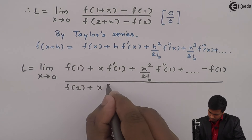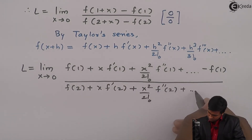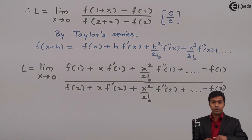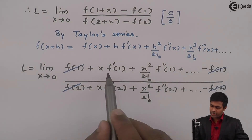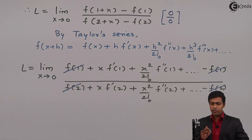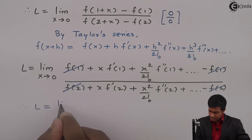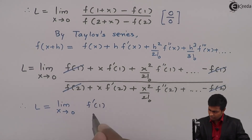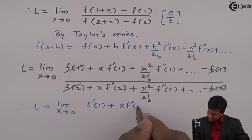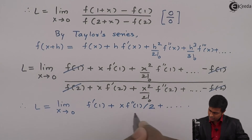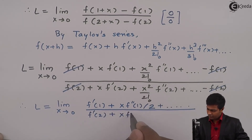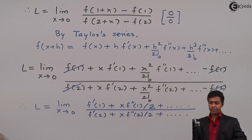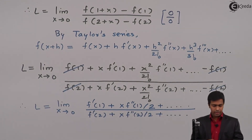Now we can cancel f(1) and −f(1) in the numerator, and f(2) and −f(2) in the denominator. From the numerator we can take x common, and from the denominator we can take x common, and those x's cancel. After this simplification we get L = limit x→0 of [f'(1) + x·f''(1)/2 + ...] / [f'(2) + x·f''(2)/2 + ...].